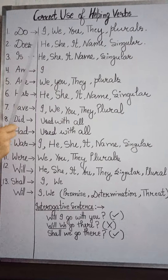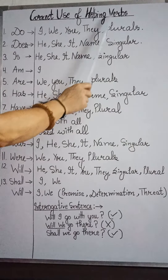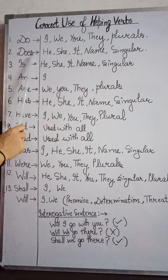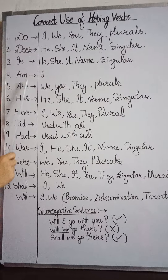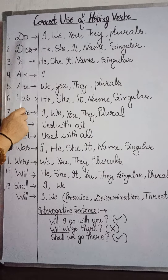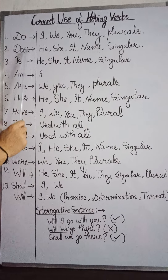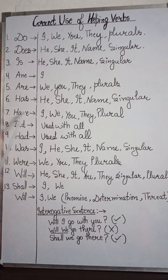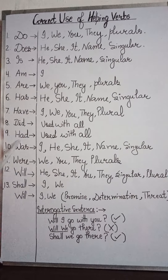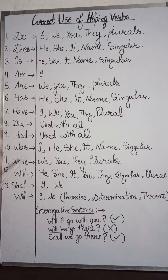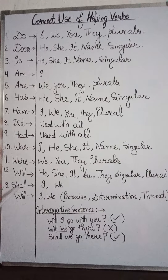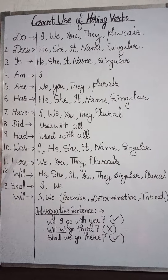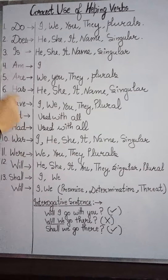When we make a sentence, we have to use some helping verbs. For example: do, does, is, am, are, has, have, did, had, was, were, will, and shall. Today I am going to tell you which person — I, we, you, they, plurals, he, she, it — uses which helping verb.